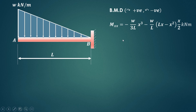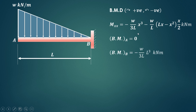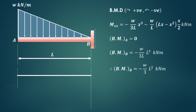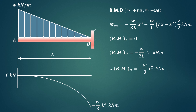We have written the general bending moment expression. The convention is clockwise positive and anticlockwise negative. At point A, X equals 0, so the entire expression is zero. At point B, X equals L: the second term gives L squared minus L squared which is zero and cancels, leaving minus W/3 times L squared kN·m. Using these values we draw the bending moment diagram, which is a third-degree (cubic) negative parabolic curve. In this way we can draw shear force and bending moment diagrams for a cantilever beam carrying uniformly varying load.